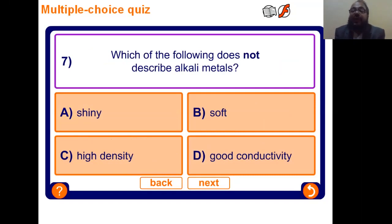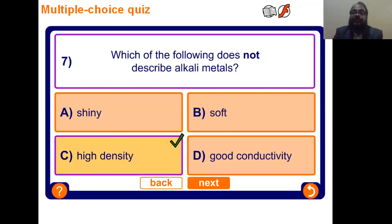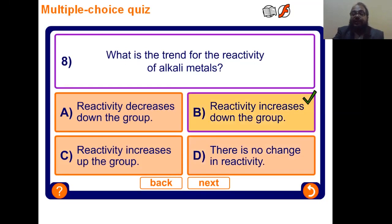Question 7: Which of the following does not describe alkali elements? Shiny surface — no, they are metals with shiny surfaces. Soft — yes, they are very soft. High density — no, alkali metals have low density. Good conductor — that is a property of metals. So the answer is C, high density. Question 8: What is the trend for the reactivity of alkali elements? The reactivity increases from top to bottom, down the group. That is correct.